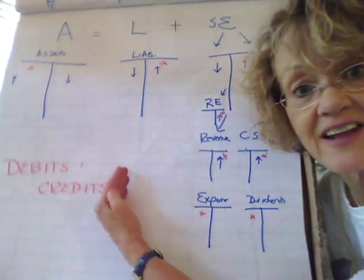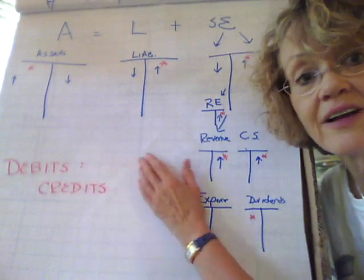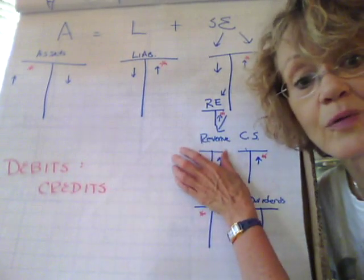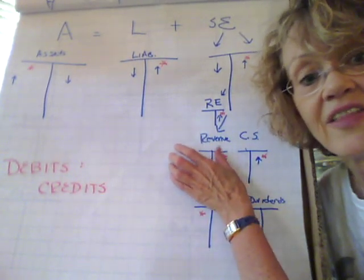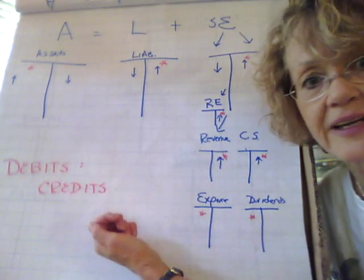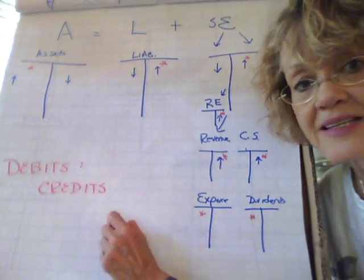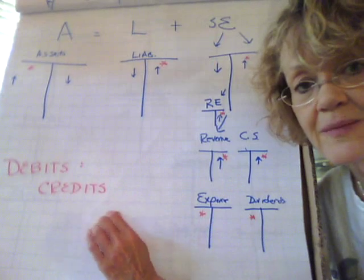are on the left side of the accounting equation and liabilities and equity are on the right side of the equation. That can kind of keep us straight to begin with debits and credits.